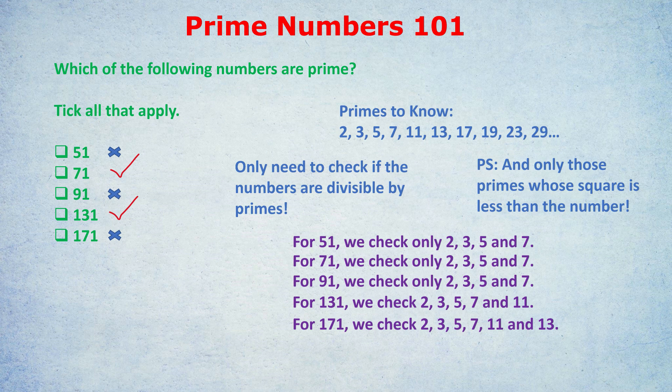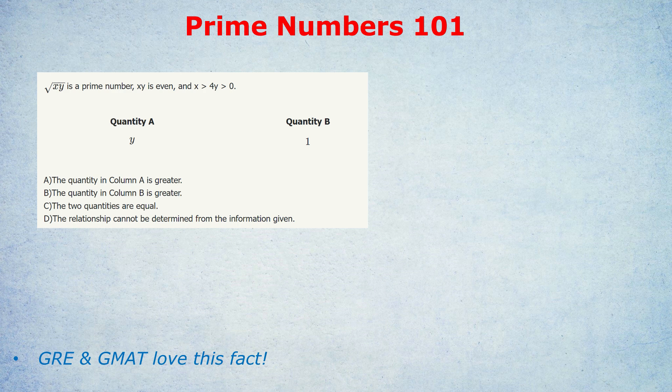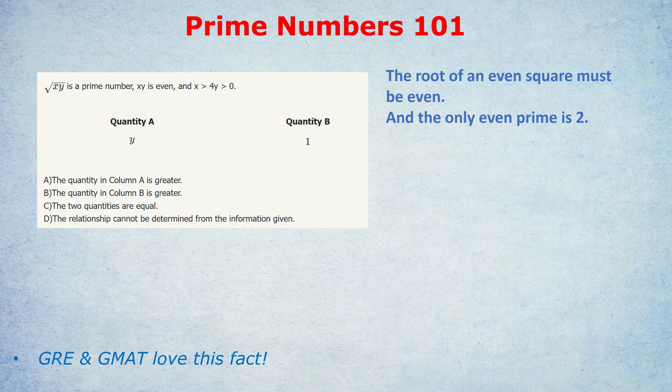We're going to move on to the final question. Prime Numbers 101, drawing on an official question yet again. Pause the video, have a go if you like. It's a harder level question this time. The square root of xy is a prime number, xy is even, and x is greater than 4 times y, which is greater than 0. What's bigger: Quantity A, y, or Quantity B, 1? This question is testing a fact I mentioned earlier. There's only one even prime number.